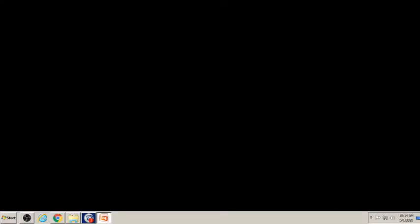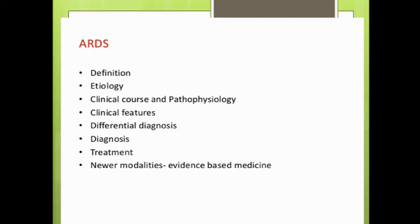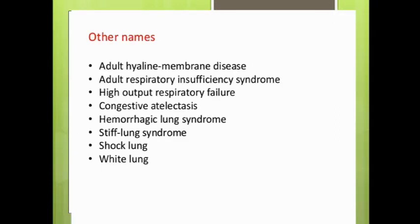We'll talk about ARDS — acute respiratory distress syndrome. It is a pathology found in ICU patients, and among 10 to 20% of ICU patients, they land up in ARDS. We'll cover definition, etiology, pathophysiology, clinical features, diagnosis, treatment, and management modalities. Another name for ARDS is adult hyaline membrane disease, which is not analogous to the hyaline membrane disease that happens in infants and newborns.